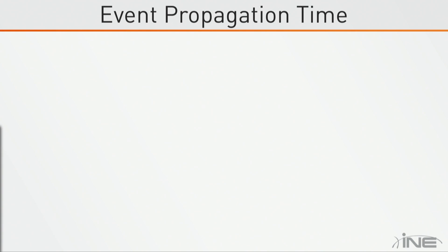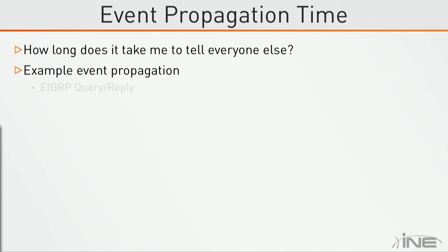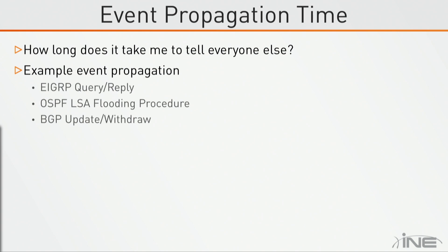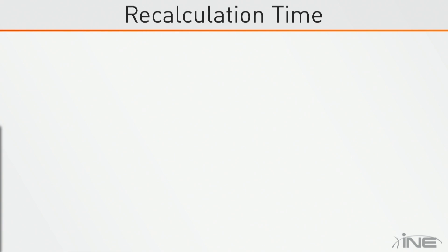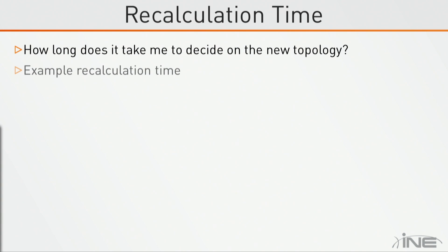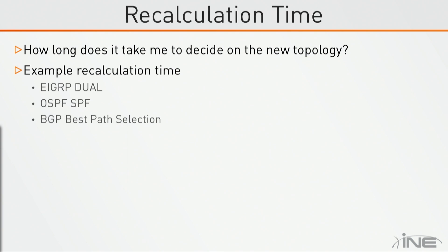Once we've figured out that the neighbor is gone, how do we tell everybody else? This is going to depend on the individual protocol. In the case of EIGRP, this is going to be the query delay time — how long does it take to ask the other neighbors if they have an alternate route and wait for the replies. In the case of OSPF and ISIS, this is going to be the link state advertisement or link state packet flooding procedure. In the case of BGP, this is going to be the update messages and then the withdraw messages. Once we know about the changes, we need to recalculate: EIGRP uses DUAL, OSPF and ISIS use shortest path first, and BGP uses best path selection. Those would be tuned separately depending on the individual protocol.